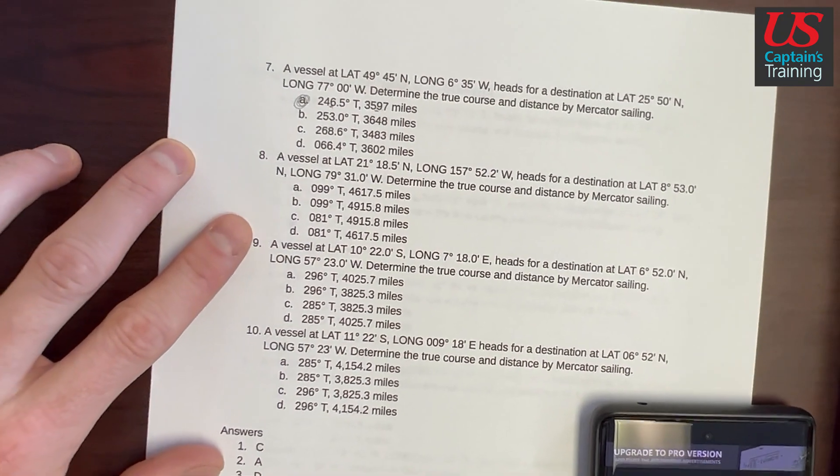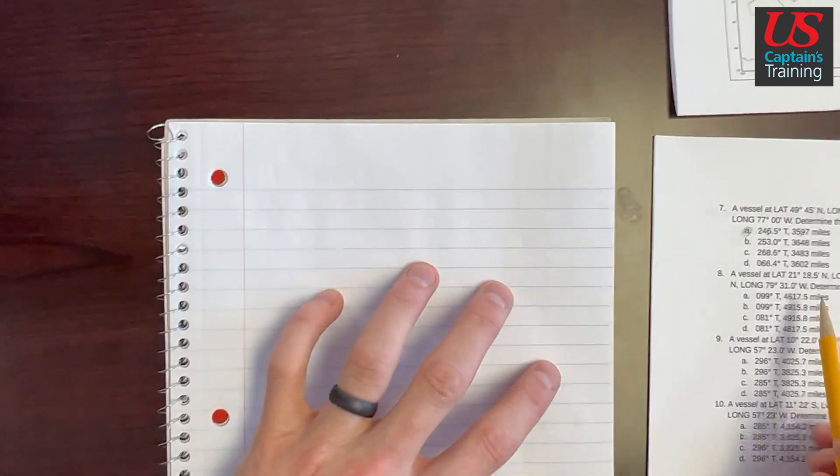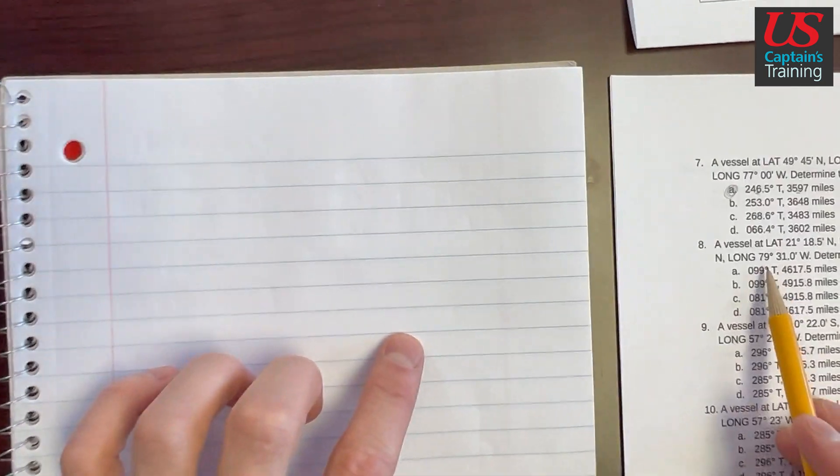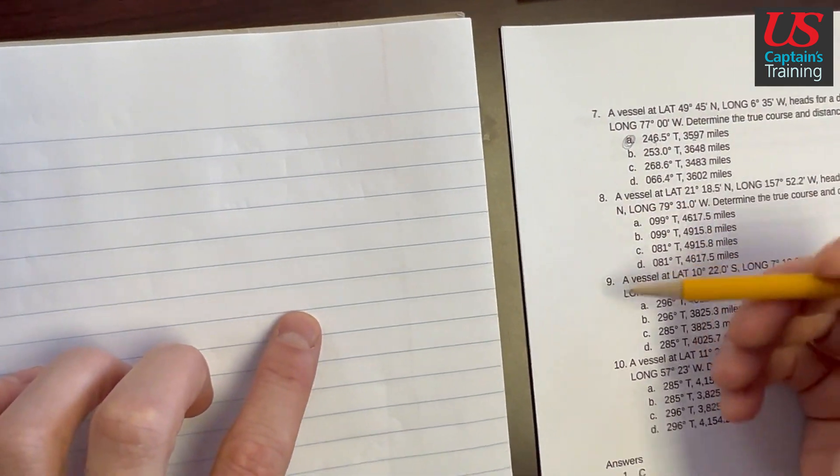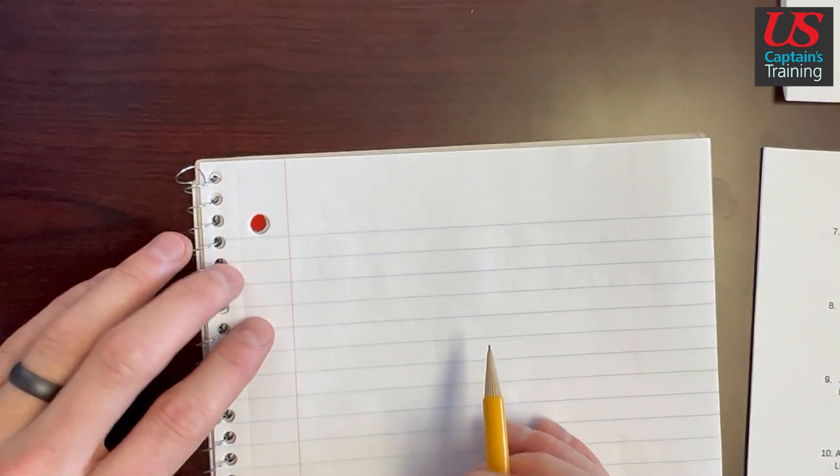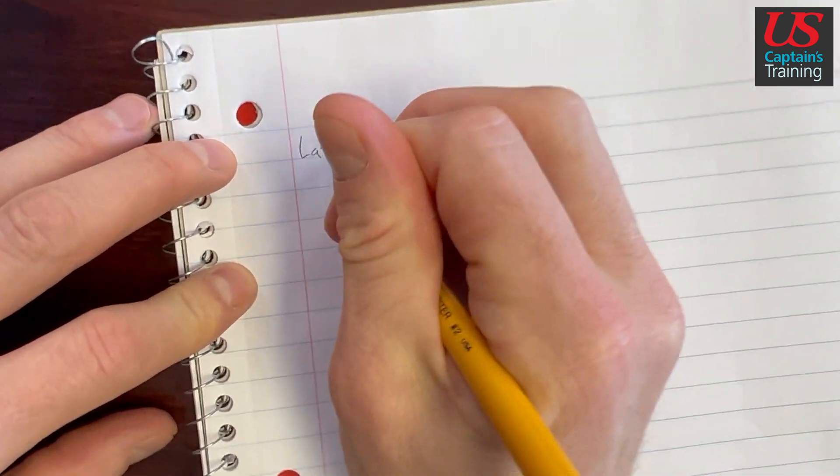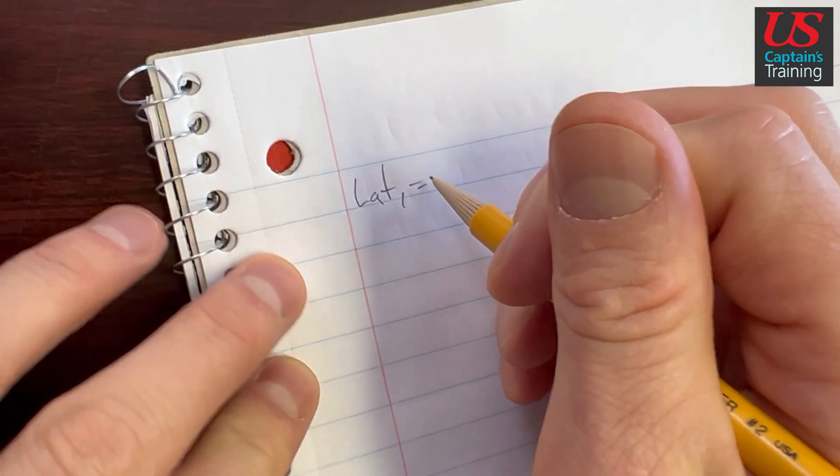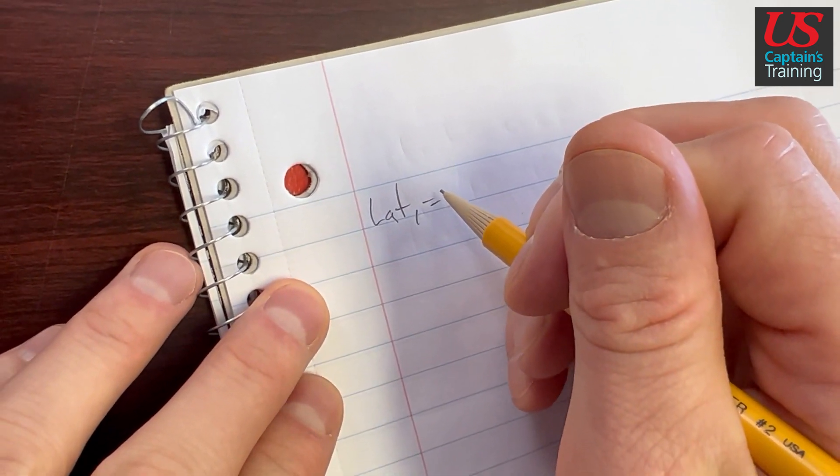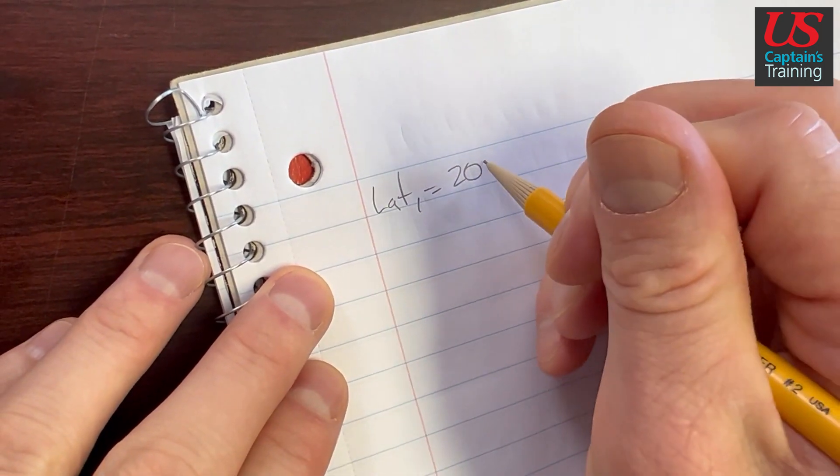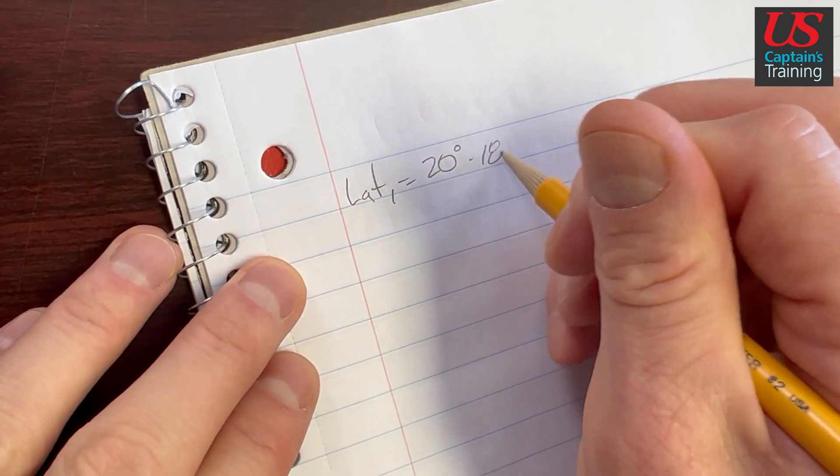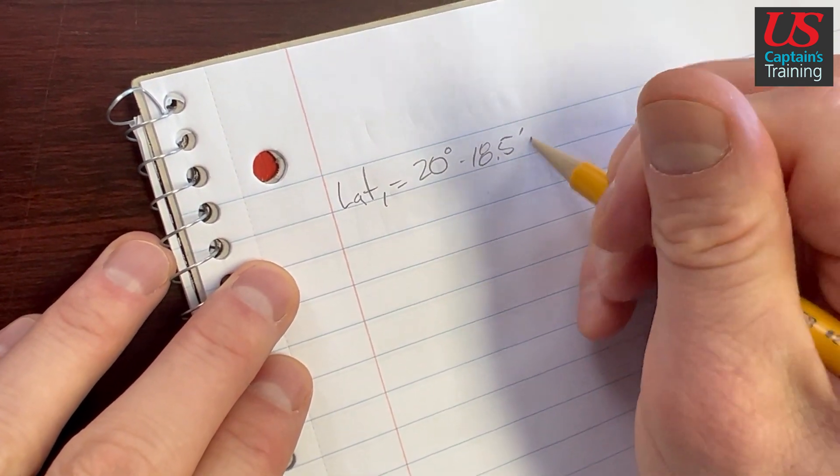So the first thing we'll do is find the difference between latitude 1 and latitude 2, which tells us how far north and south we've traveled. So little l equals latitude 1 minus latitude 2. So let's find little l. Lat 1 equals 21 degrees 18.5 minutes north.